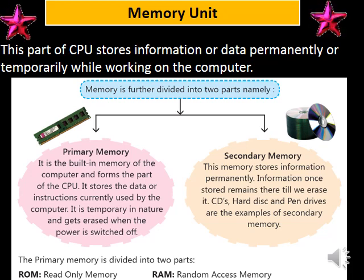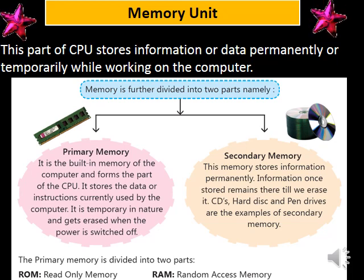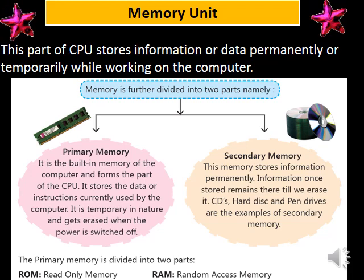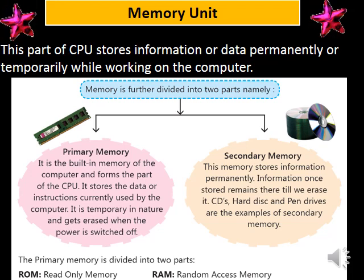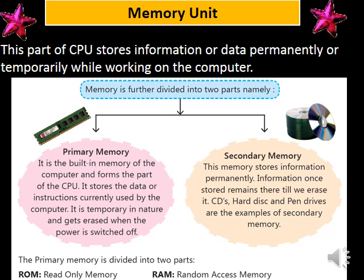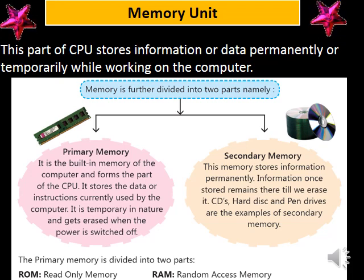What is secondary memory? This memory stores information permanently. Information once stored remains there until we erase it. CDs, hard disk and pen drives are examples of secondary memory. The primary memory is divided into two parts: ROM — read only memory — and RAM — random access memory.